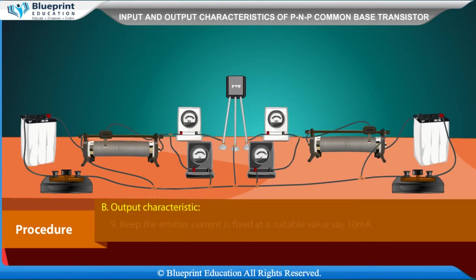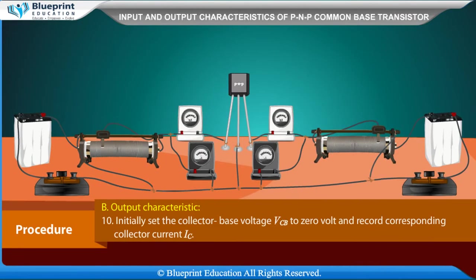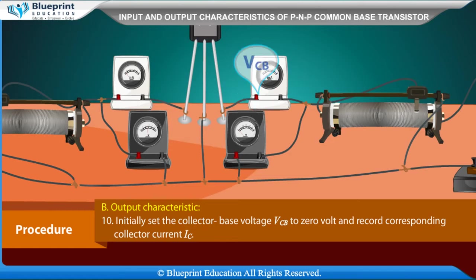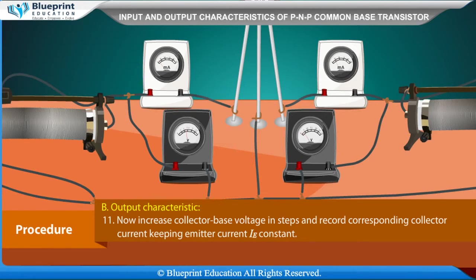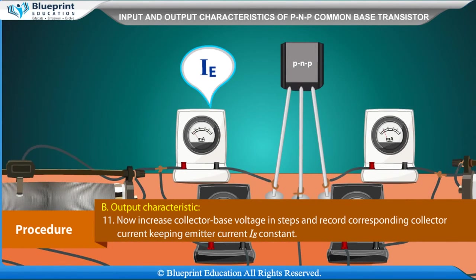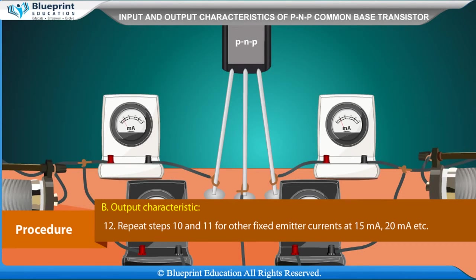Output Characteristic: Keep emitter current IE fixed at a suitable value, say 10 mA. Initially set collector-base voltage VCB to 0V and record the corresponding collector current IC. Increase VCB in steps and record IC, keeping IE constant. Repeat for other fixed emitter currents such as 15 mA and 20 mA.